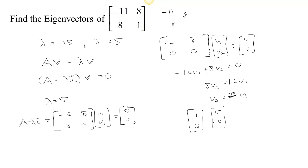You can even check that they do. If you take negative 11, 8, 8, 1 and you multiply it by any vector where the second entry is twice the first, like maybe 3 and 6, what do we get? Negative 33 plus 48. Negative 33 plus 48 is 15. And then we get 24 plus 6 is 30, which we recognize that as 5 times what we started with.